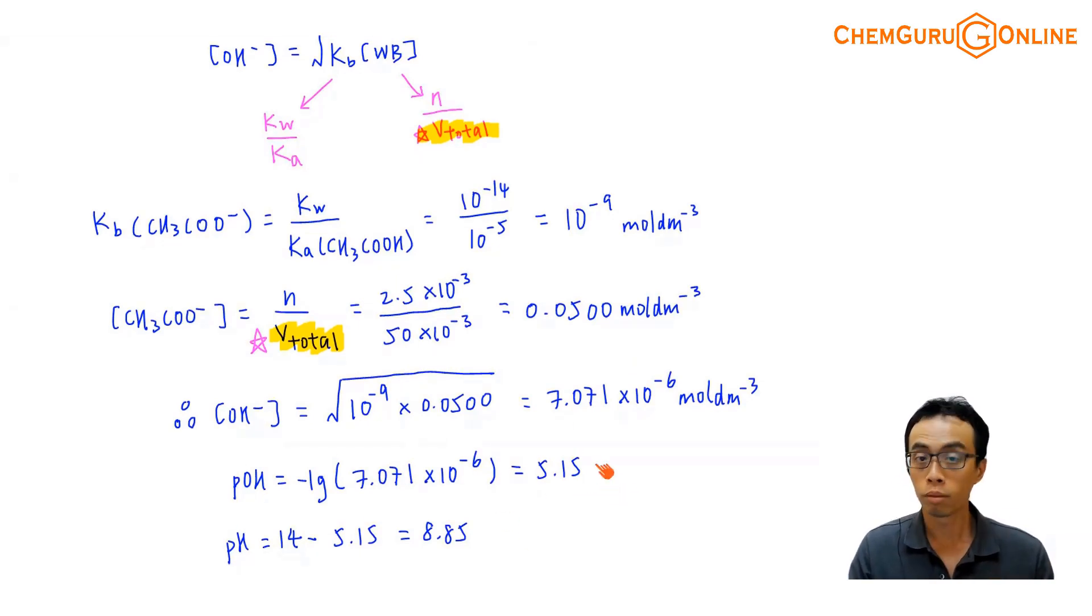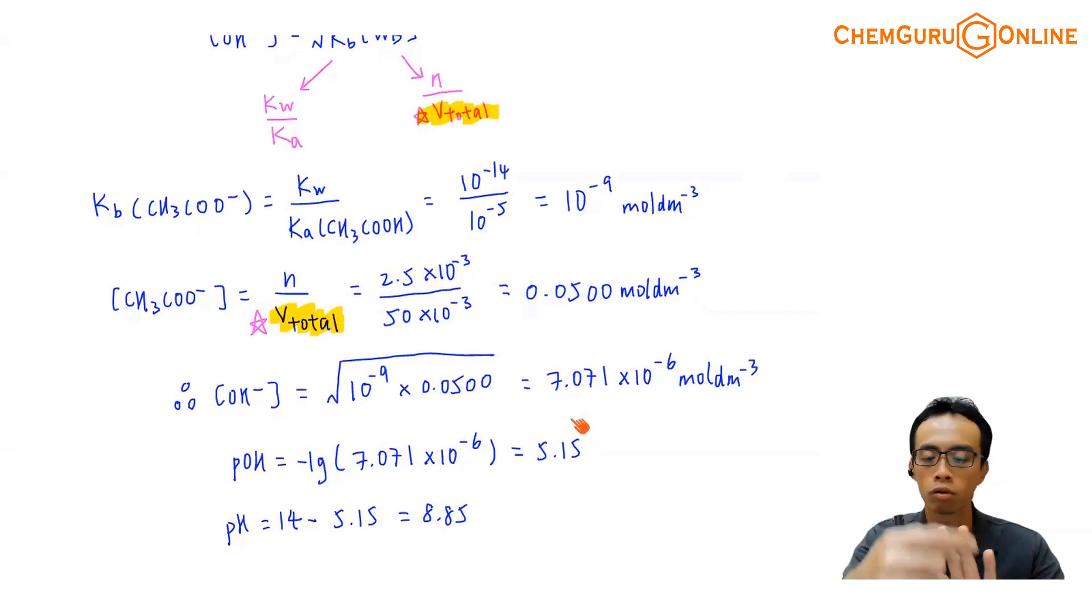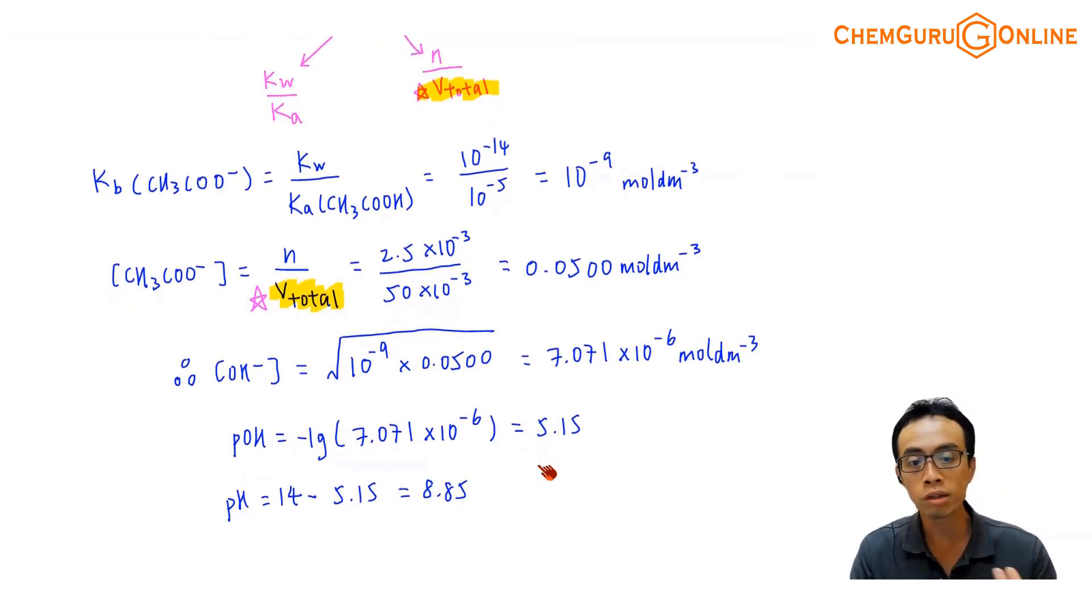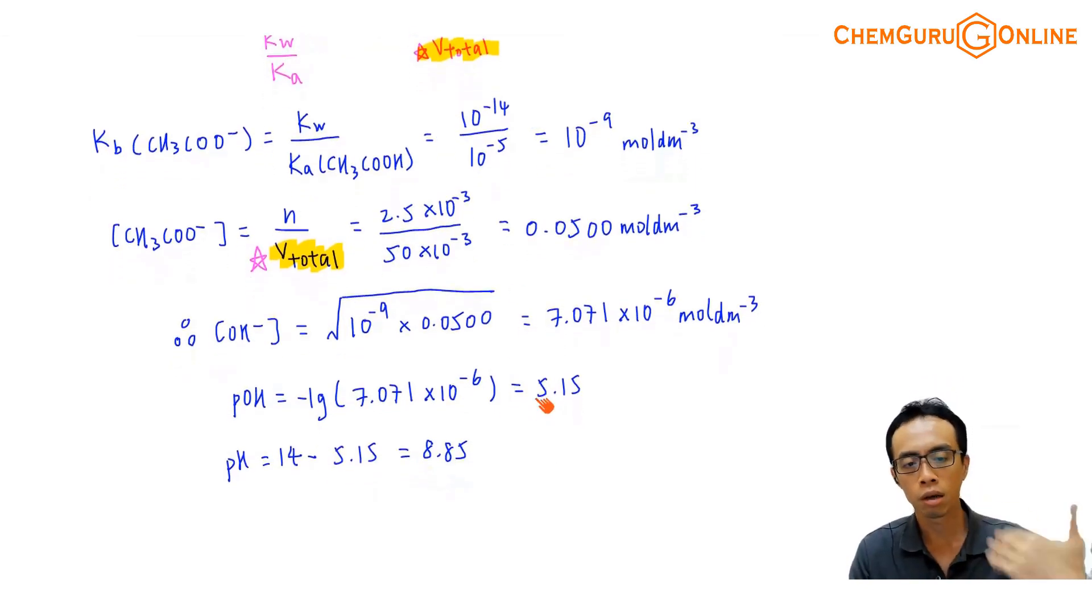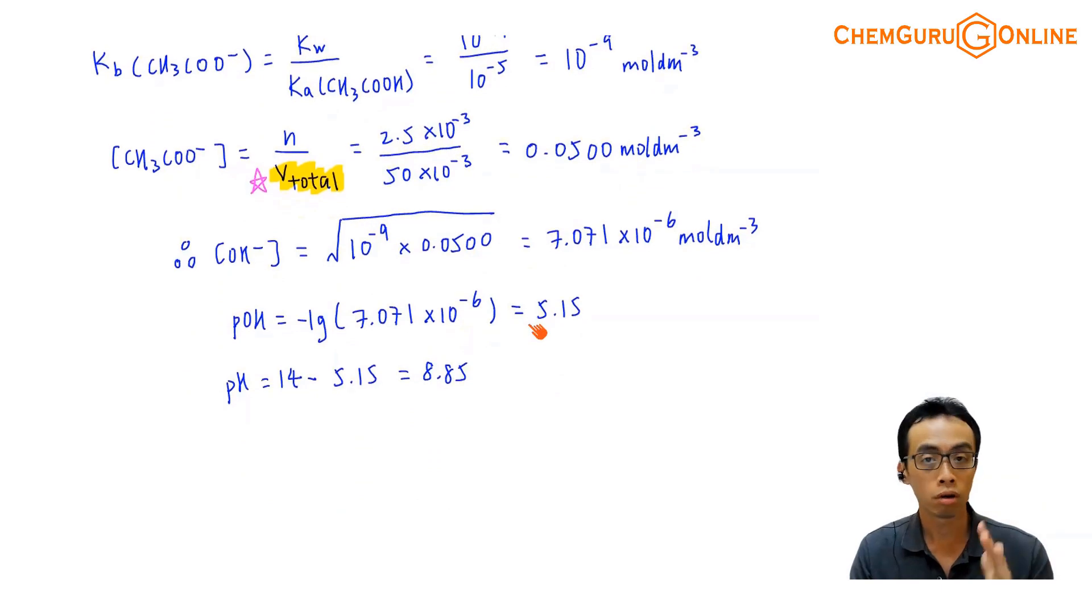So formally, this is how we calculate the pH of my equivalence point. But again, if you look at the working, we just need to use the concept. And we link the equivalence point to a salt, link the salt to a conjugate base, link the conjugate base to a weak base. I'm just using the formula of a weak base to find the pH of this equivalence point. So please keep this in mind. Everything will link back to one of these five solutions that we keep on emphasizing. We need this reinforcement. Everything can be linked back to one of these five solutions.